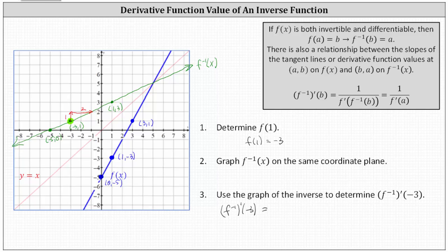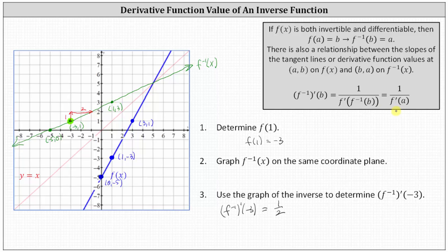So f inverse prime of negative three is equal to one half. But I also want to take a look at our notes above. There's a relationship between the slopes of the tangent lines and derivative function values at the point a comma b on f of x and b comma a on f inverse of x: f inverse prime of b is equal to one divided by f prime of f inverse of b. Since f inverse of b equals a, we can say f inverse prime of b is equal to one over f prime of a. This indicates the derivative function values at corresponding points on the function and its inverse are reciprocals of one another.